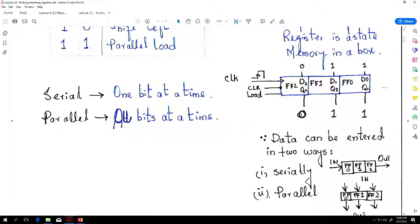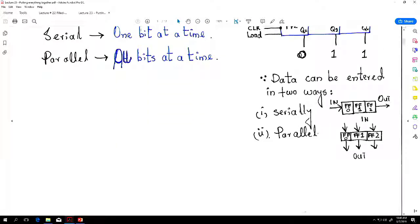Data can be entered in two ways: serially and parallel. There are four different types: serial in serial out, and parallel in parallel, and two more that we discussed in the earlier lecture.